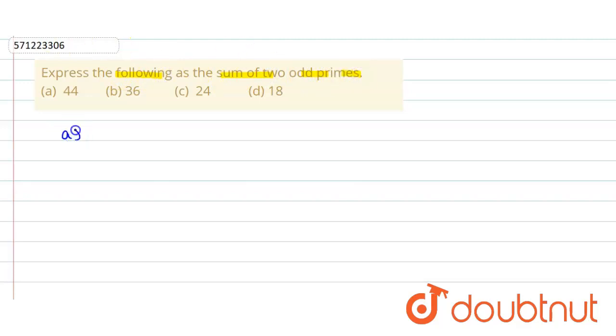So here, the first number is equal to 44. We know that prime numbers are those numbers which are divisible by their own table or the table of one. So here, 44 equals, we have to write it as a sum of two odd prime numbers.